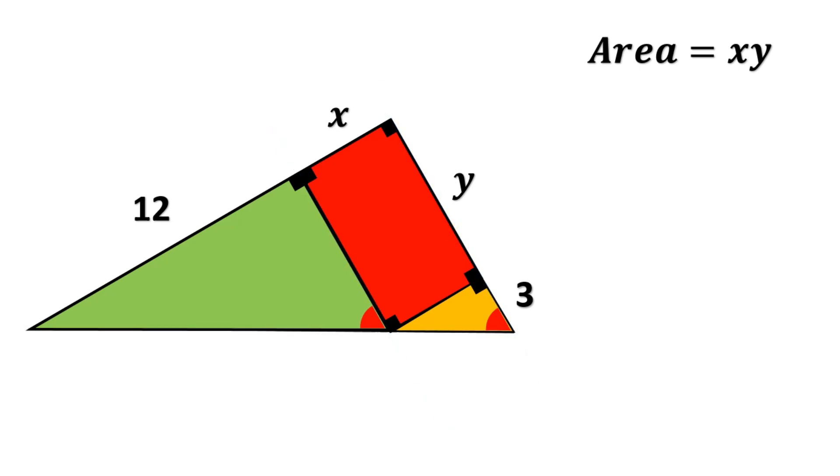Now, take a look at the other pair of sides. They're also parallel, and the same slanted line intersects them as well. This gives us another pair of equal angles. This time, the yellow ones.